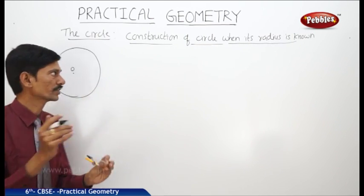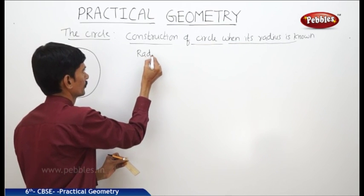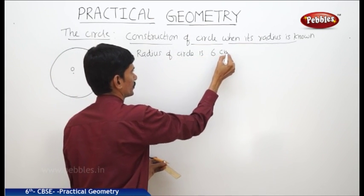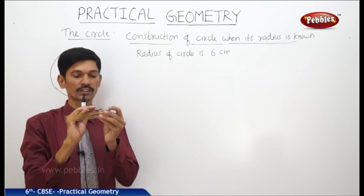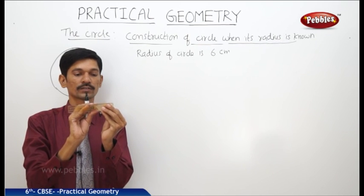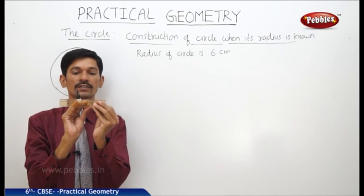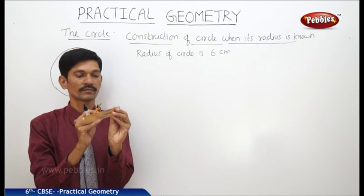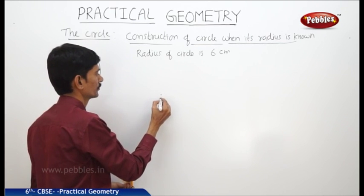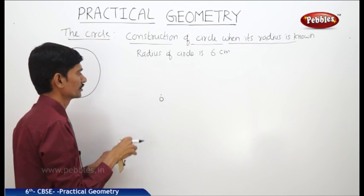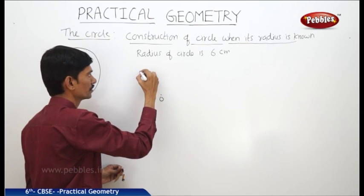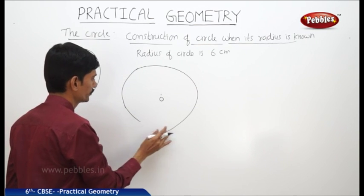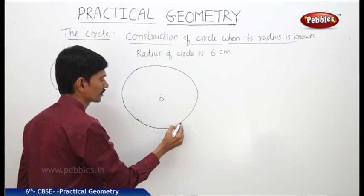Open the compasses so that we take the required radius. If the radius is 6 centimeters, place the pointer of the compasses at 0 and open the compasses so that the pointer of the pencil coincides with 6. Mark a fixed point O and place the pointer of the compasses at O and draw a circle slowly.